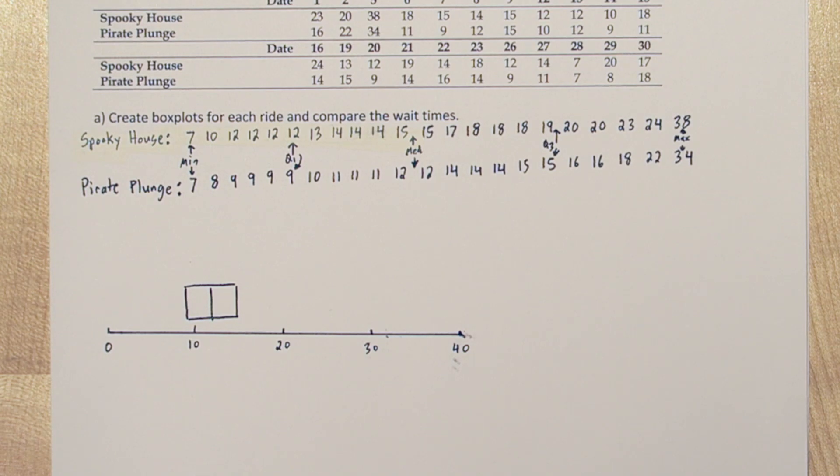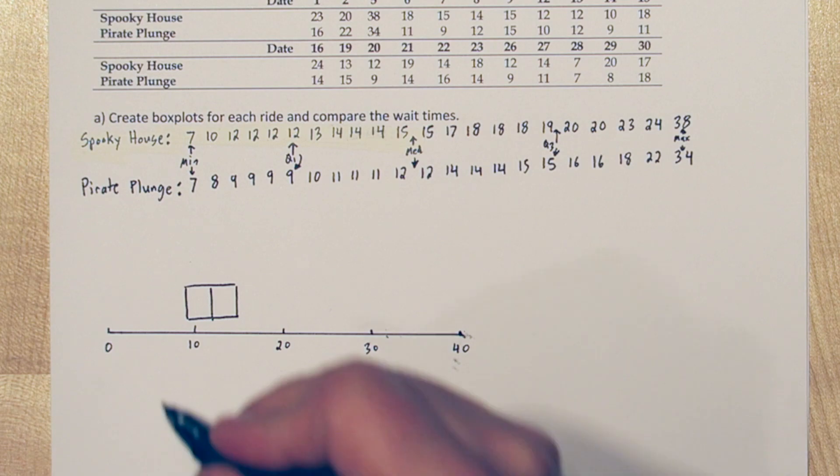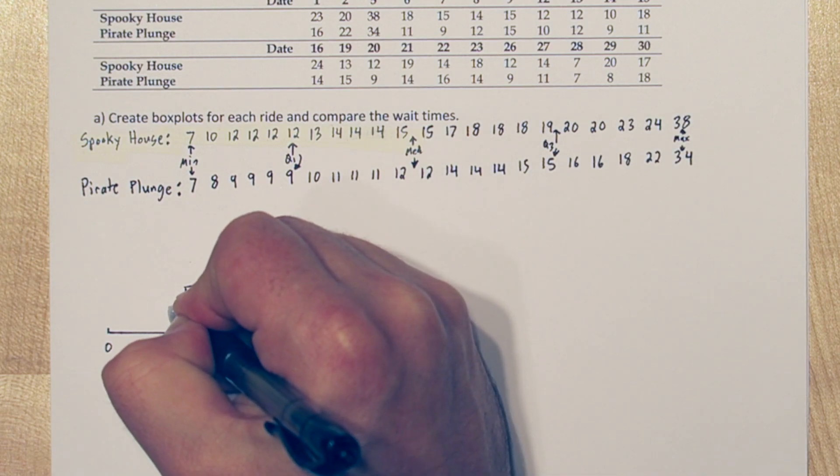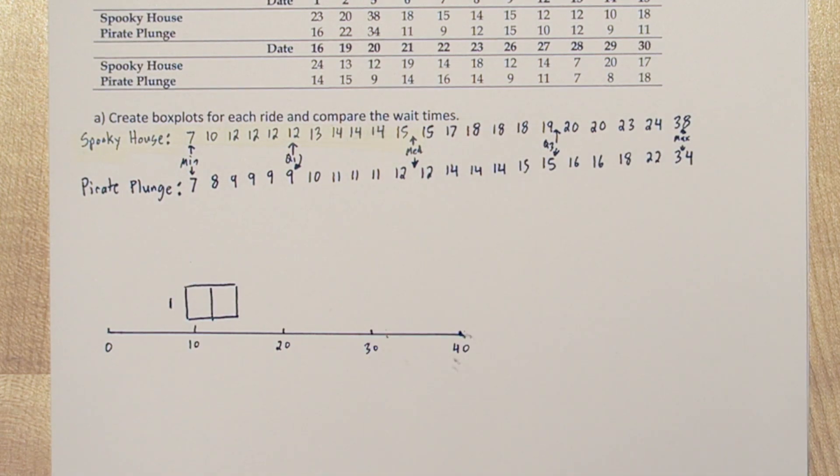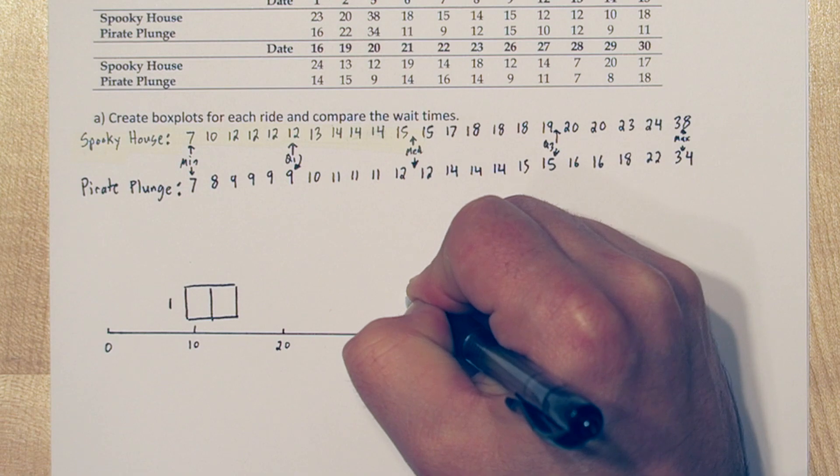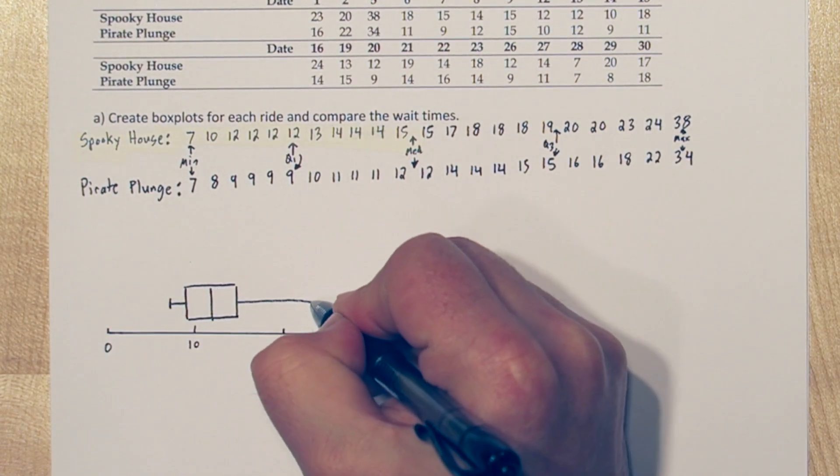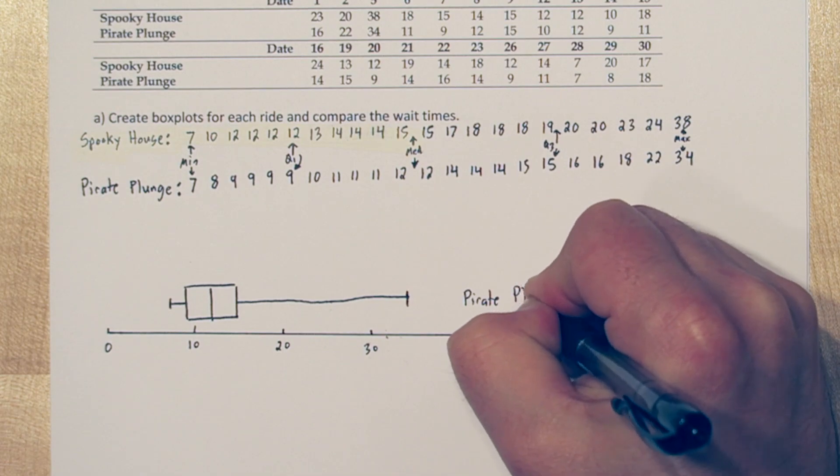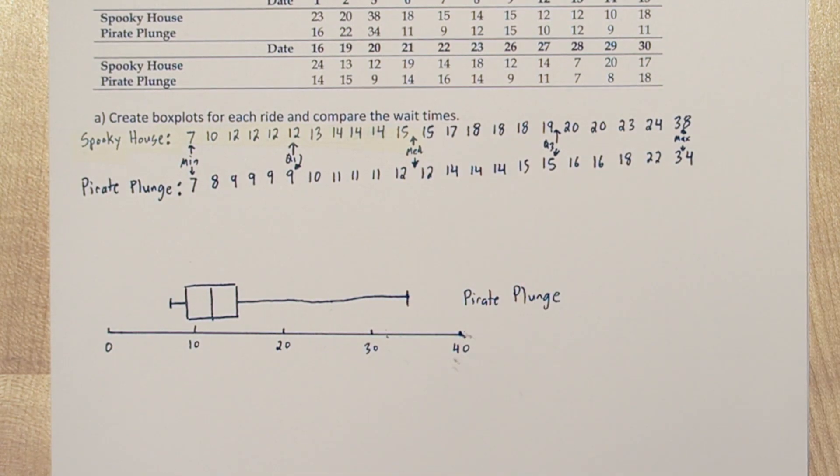Next let's graph the minimum and maximum. The minimum waiting time was 7 minutes, and we're going to draw a small vertical line. And the maximum wait time was 34 minutes. We'll draw another small vertical line. Now we'll connect those vertical lines to the box with whiskers. There's our box and whisker plot for Pirate Plunge.